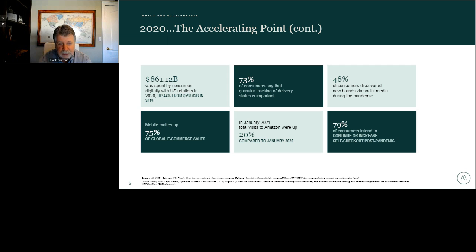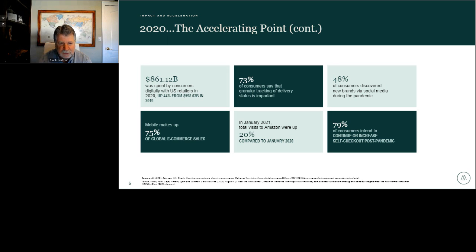Clearly mobile — we've got to be able to meet the customer where they are. The last mile: 73% of people want to know not only do they get it tomorrow, but what time tomorrow, and where it is — whether it's at a FedEx or UPS delivery spot. We're demanding more as consumers, and as retailers we have to meet that demand. You can see the big jump in Amazon and where brands are going with social media. All of these numbers I put into the bucket of acceleration.